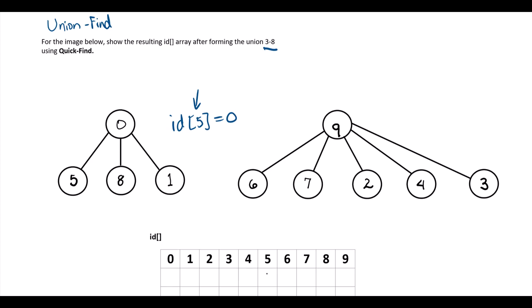And I'm not setting it to zero, but I'm just showing the current state. So the ID of five is zero. And in fact, the ID of eight and one are both zero.